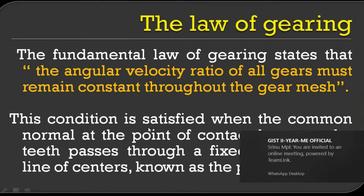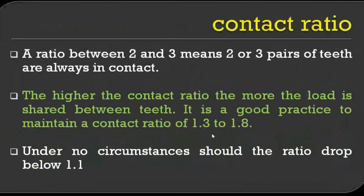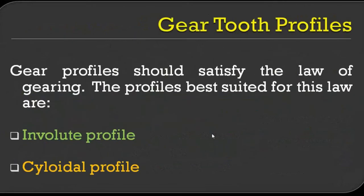The profile which satisfies this law of gearing is recommended for gear tooth profiles. Only two profiles satisfy this law of gearing: involute and cycloidal profiles. You may have other profiles — elliptical profiles, parabolic profiles — but these profiles cannot satisfy the law of gearing. Only involute and cycloidal profiles satisfy this law, which is why they are considered best suited for gear tooth profiles.